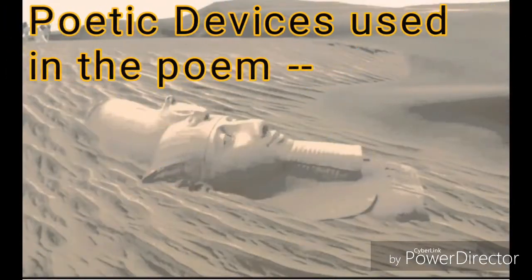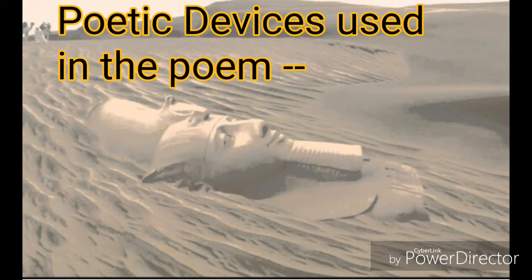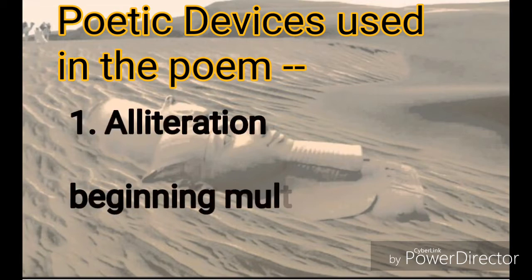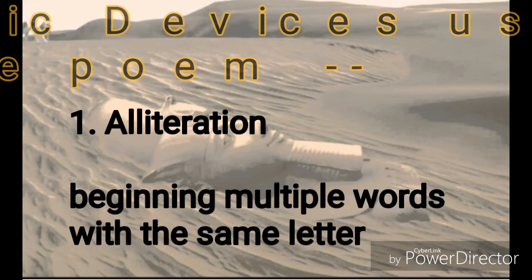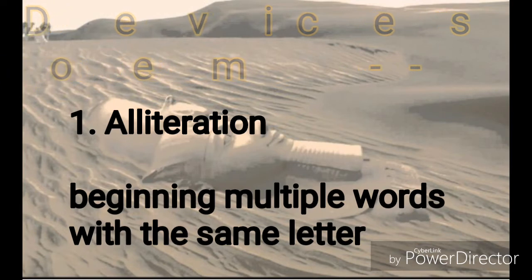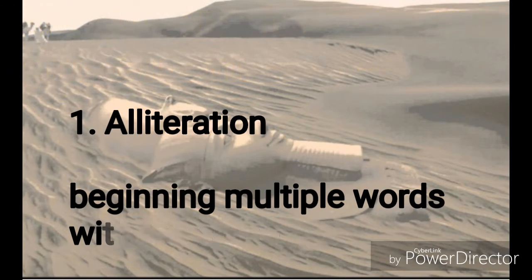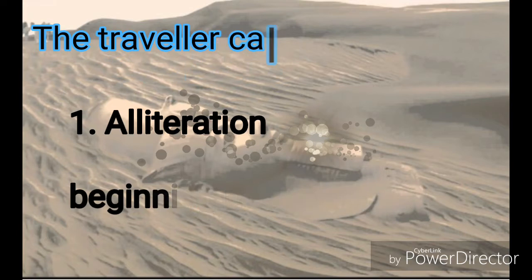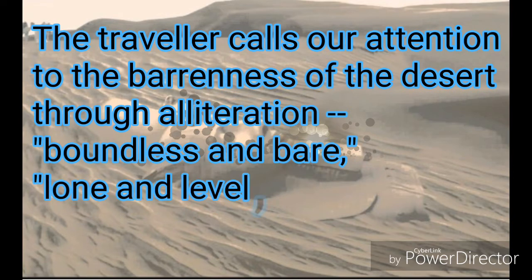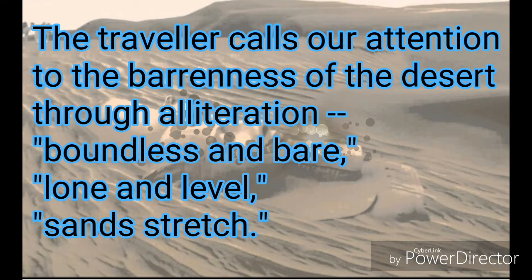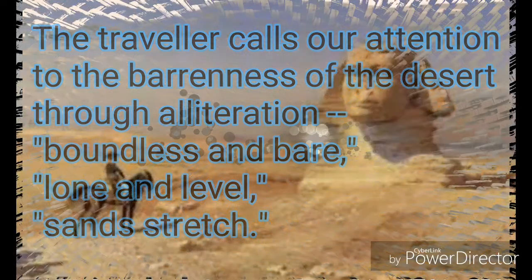Poetic devices used in the poem. Alliteration is the beginning of multiple words with the same letter. The traveller calls our attention to the barrenness of the desert through alliteration: 'boundless and bare,' 'lone and level sands stretch' are some examples.